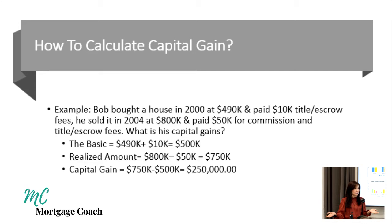Bob lived in the house until 2004 and sold it for $800,000. He had to pay $50,000 for closing costs — title, escrow fees, transfer tax, commissions, and so on. So his realized amount is $800,000 minus $50,000, which equals $750,000. To calculate the capital gain, we take the realized amount of $750,000 and subtract the basis of $500,000, giving a capital gain of $250,000.